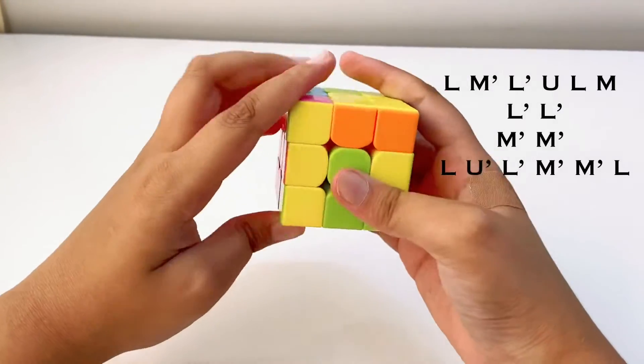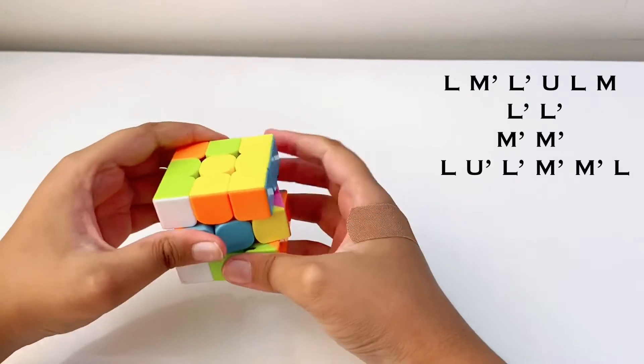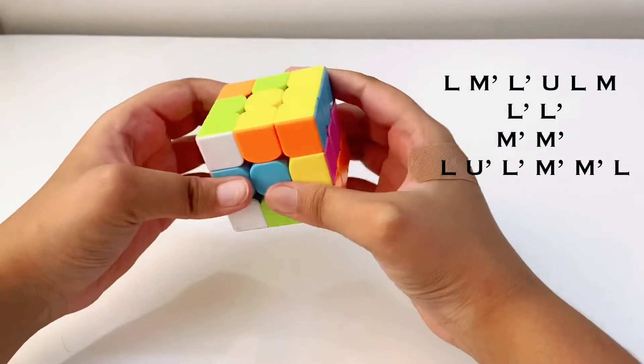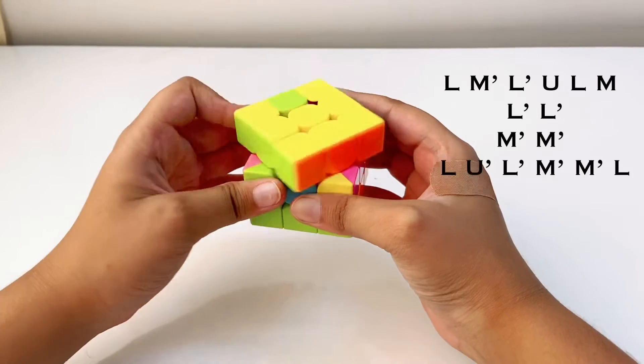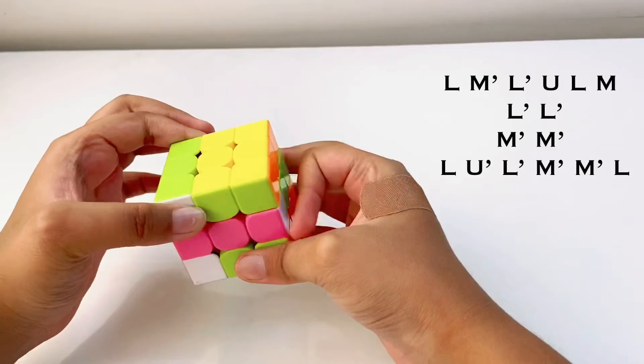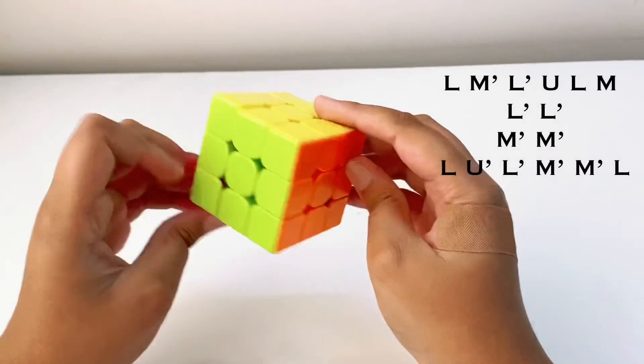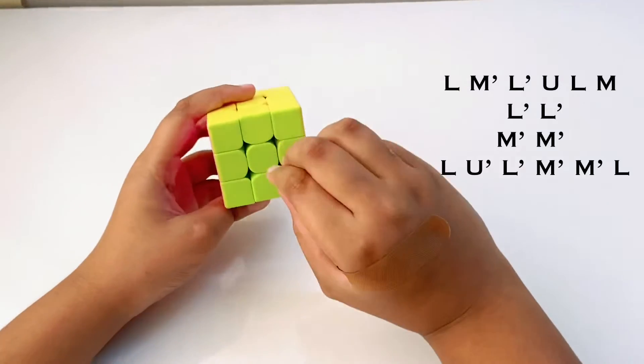Then L dash, M dash 2, L, U dash, L dash, M dash 2, and then L. See, this is how you solve this case.